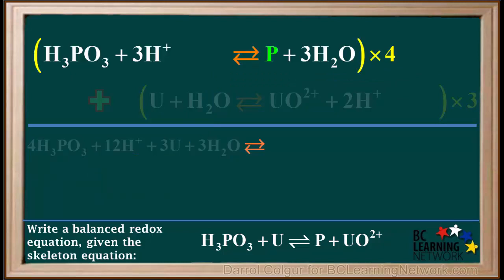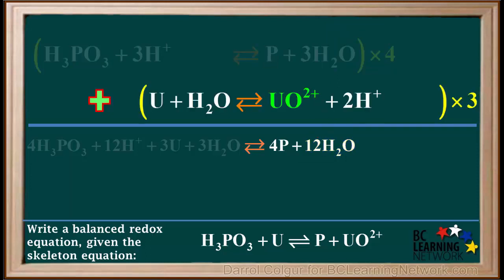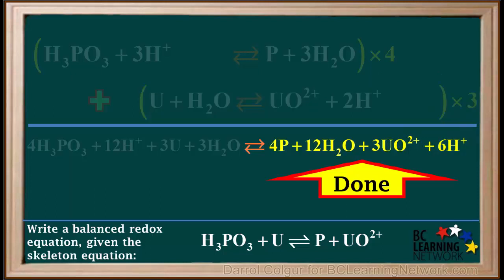Now we'll go to the top right. We have 4 times 1P, which is equal to 4Ps, and 4 times 3H2O, which equals 12H2O. Finally, we go to the bottom right. We have 3 times 1UO2+, which is 3UO2+, and we have 3 times 2H+, which is 6H+. And the right side of the overall redox equation is done.